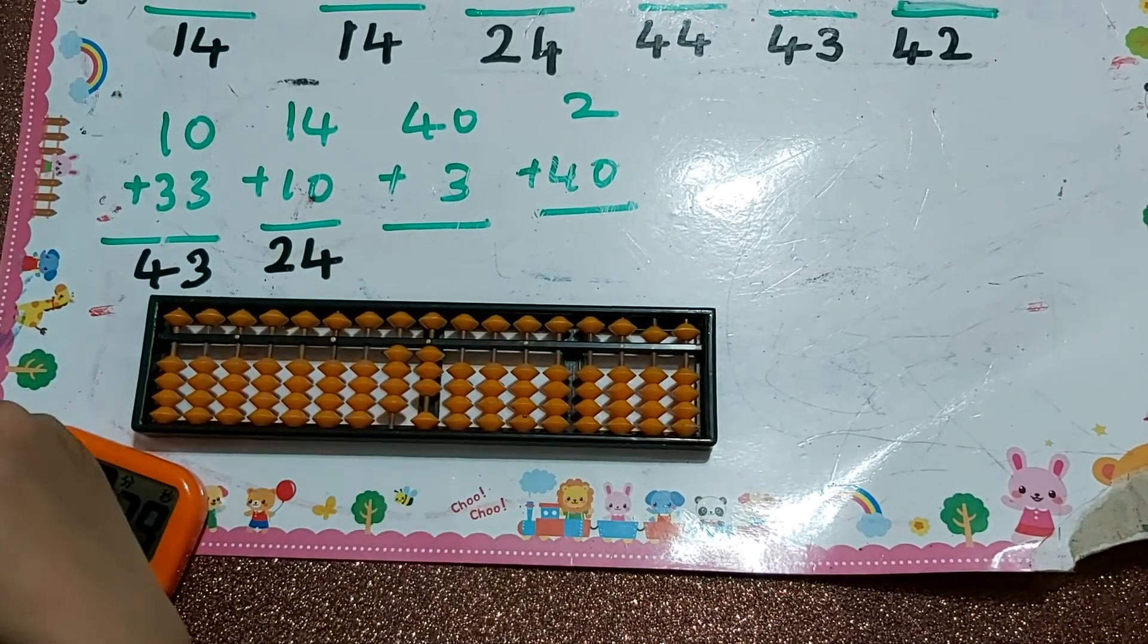Next, plus 3. You can count 1, 2, 3, or you can do it directly. The answer is 43.